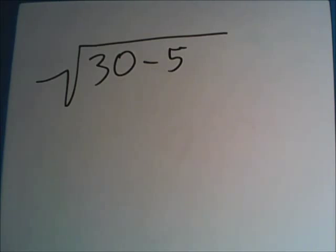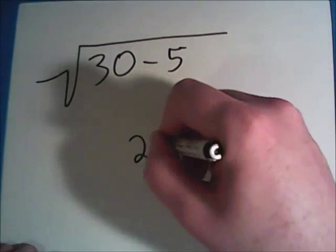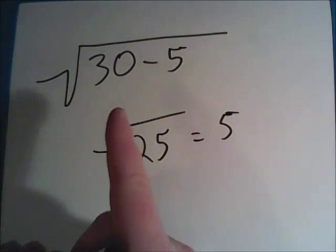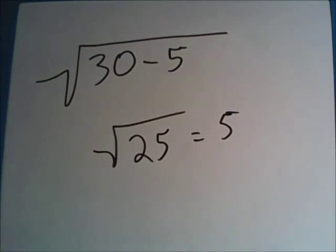This next one has us doing an operation within the square root symbol before we actually find a square root. For some reason this throws a lot of students off because they're not expecting it, but really all you have to do is the operation within the square root symbol first. So we'll do 30 minus 5, and that'll get us 25. So this question is really just asking for the square root of 25, and we know that to be 5. Don't be thrown by this—just do the operation and then whatever the answer is, take its square root.